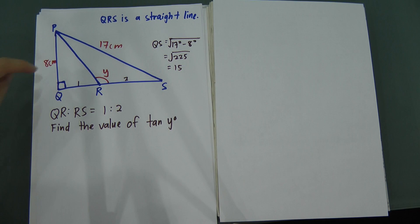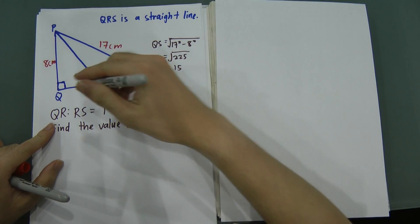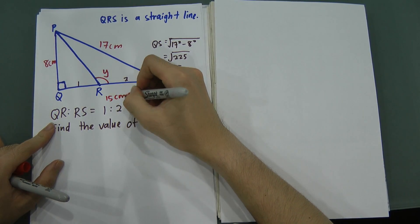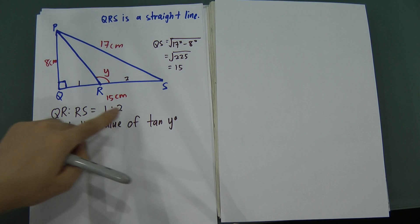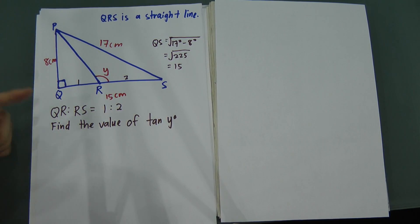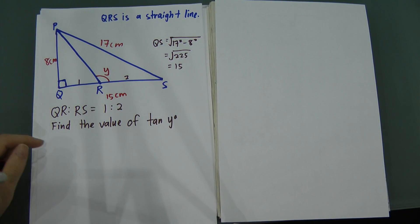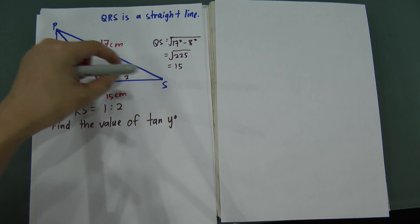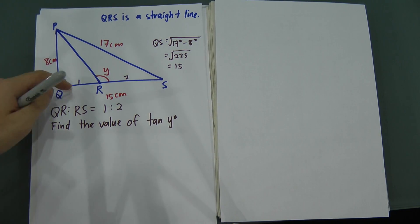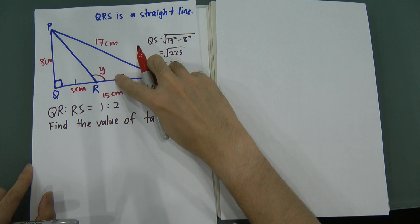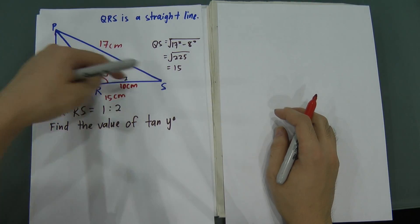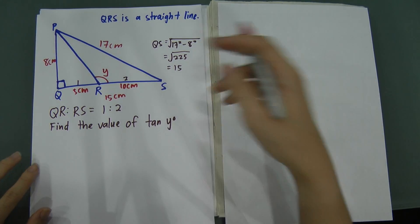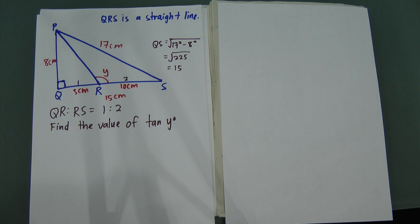You get 15. If you've memorized Pythagorean triples, you'll quickly recognize this as the 8-15-17 triple. So the whole length RS is 15 centimeters. To divide it by the ratio 1:2, add the parts together: 1 + 2 = 3. Then 15 ÷ 3 = 5 centimeters per unit. So QR = 5 cm and RS = 10 cm, and 5 + 10 = 15. That makes sense.